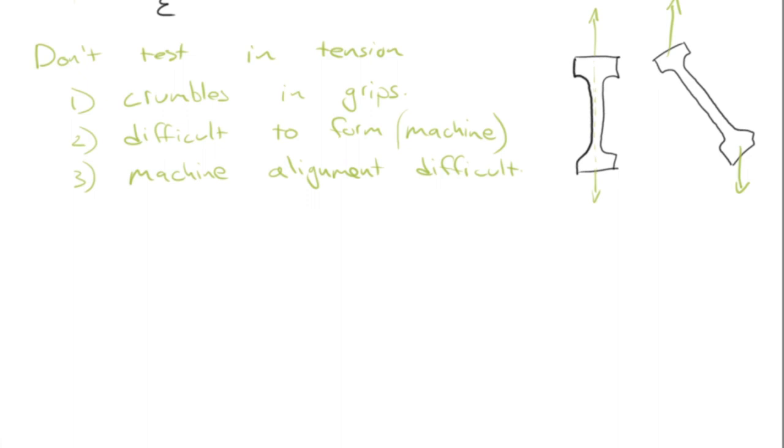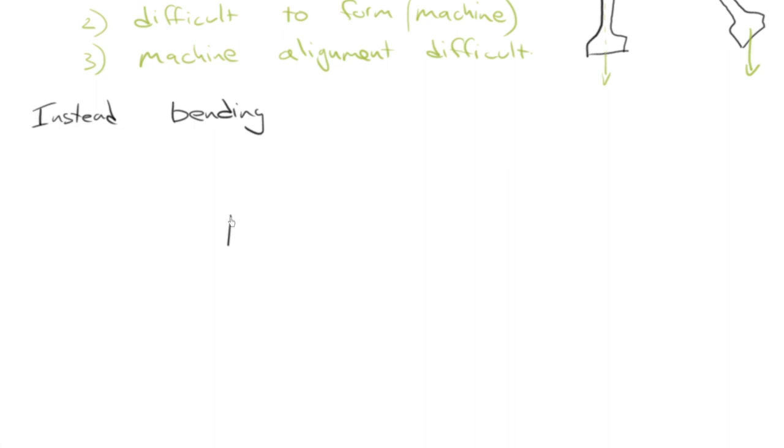So instead, we need something different. What we tend to use is instead we load the samples in bending. What does bending look like? Well, bending, you need a beam. A specimen might look something like this. I'm going to take a rectangular cross section. And then what you do is you support it in a couple of places on the bottom. And then you load it. This particular one is supported in two places on the bottom and a load is applied to the top. So it's called three point bending.